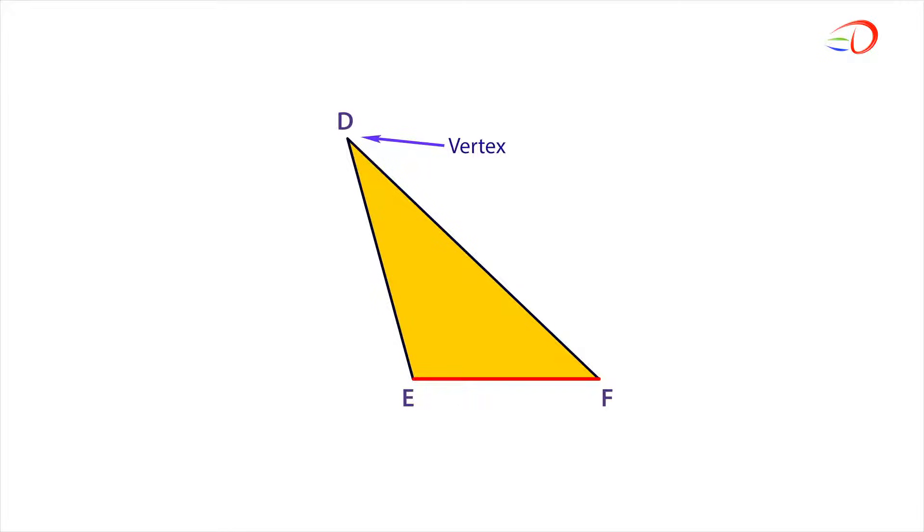From vertex D, draw a line to the base. It doesn't meet the base EF. What should we do? Extend a line from the base, EF. Now, draw a perpendicular line from vertex D to the extended line to form a right angle. So when EF is the base, this is the height.